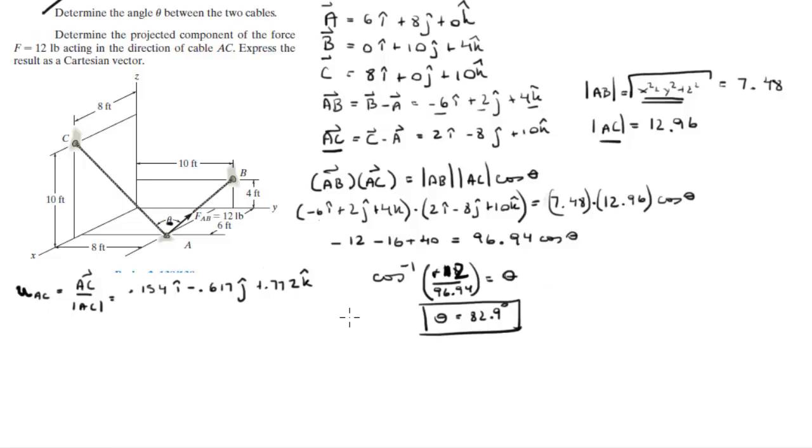However, we need to find also the unit vector AB in order to find the Cartesian vector form of F. The unit vector AB can be found by dividing the vector AB by its magnitude, and it comes out to be negative 0.802i plus 0.267j plus 0.535k.